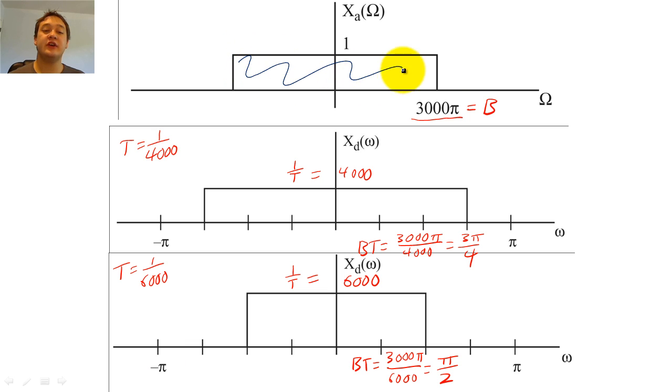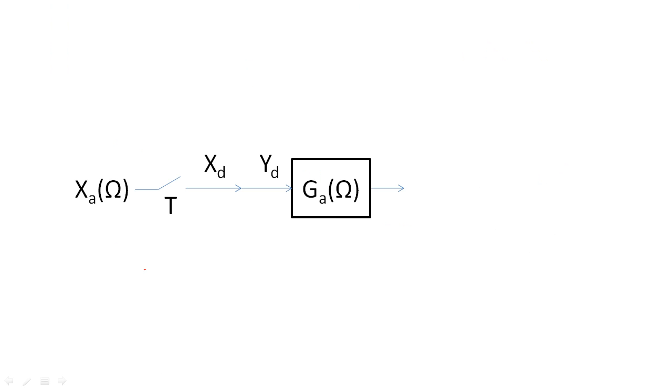Notice that the area under the curve is the same for all three spectra. Let's recap. Our input X of t has this Fourier transform.